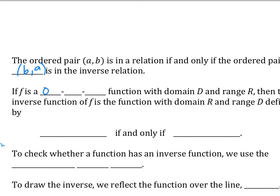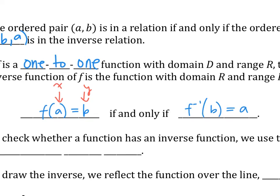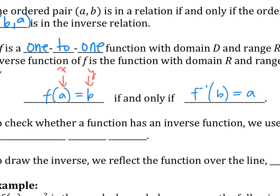We call that a one-to-one function, which means every x only has one y. Then that means if you have f of a number - remember this part is x and this part is y - so f of a equals b, meaning f of x equals y. Then in the inverse function, if you put b inside you should get a out. In the original function, x and y are related this way; in the inverse function you switch y and x. If you're given a function, how do you check to see if the inverse is going to be a function? You will always have an inverse, but it doesn't mean the inverse will be a function. Every function has an inverse, but the inverse might not be a function.